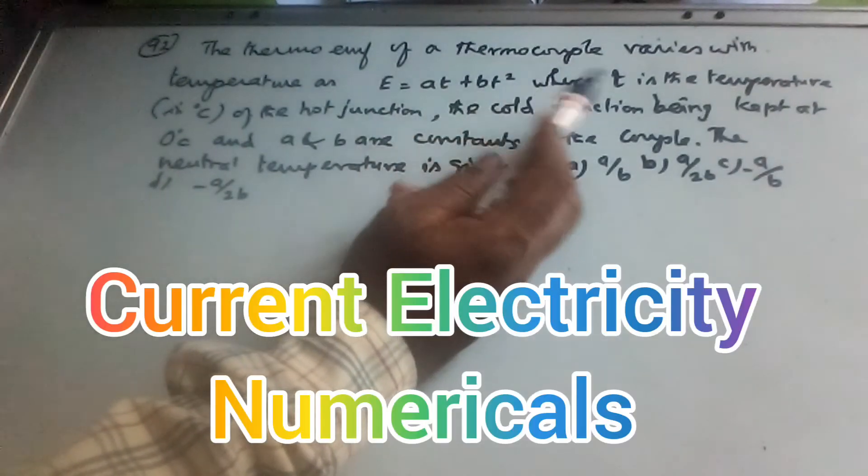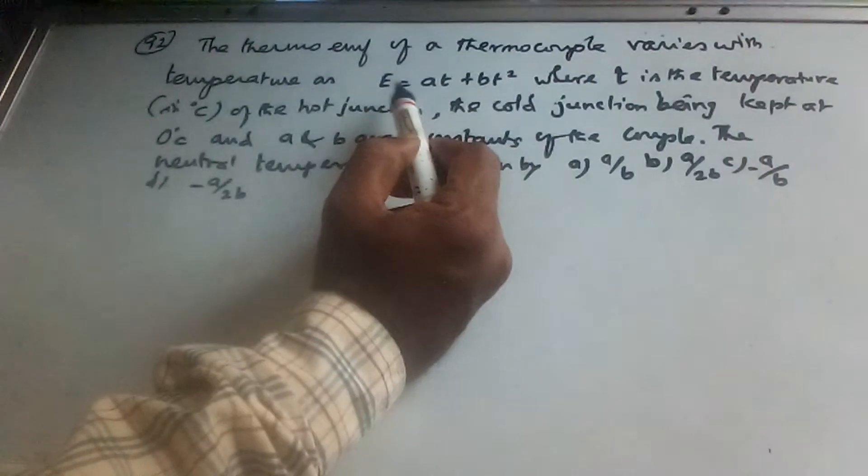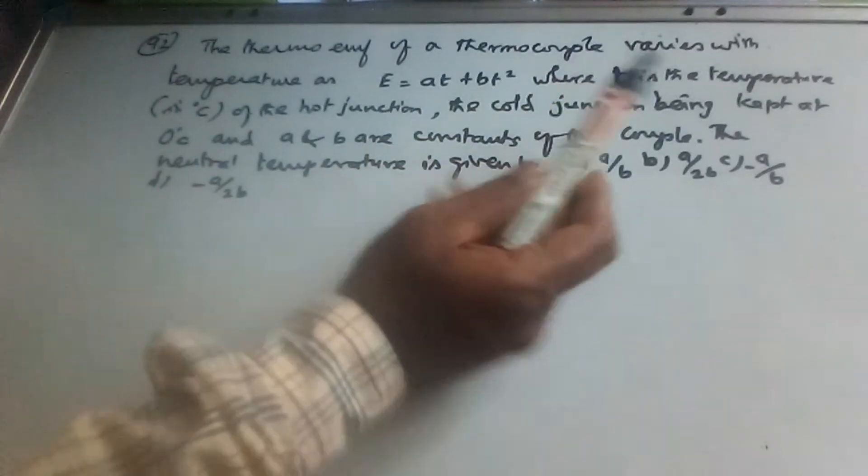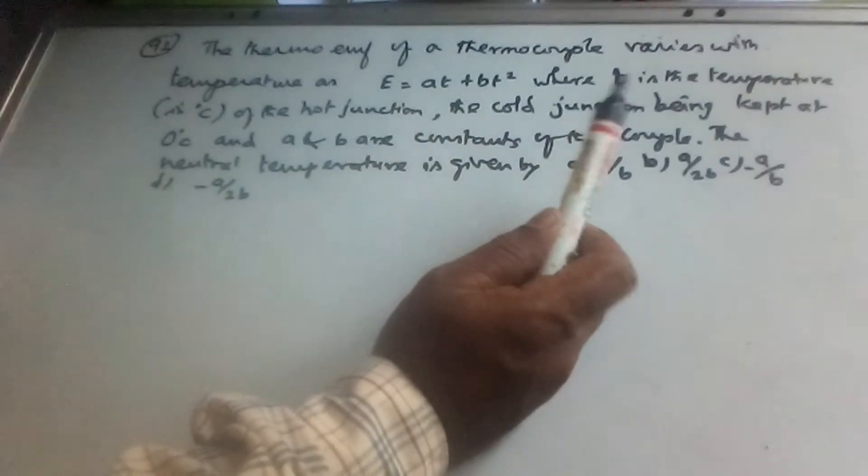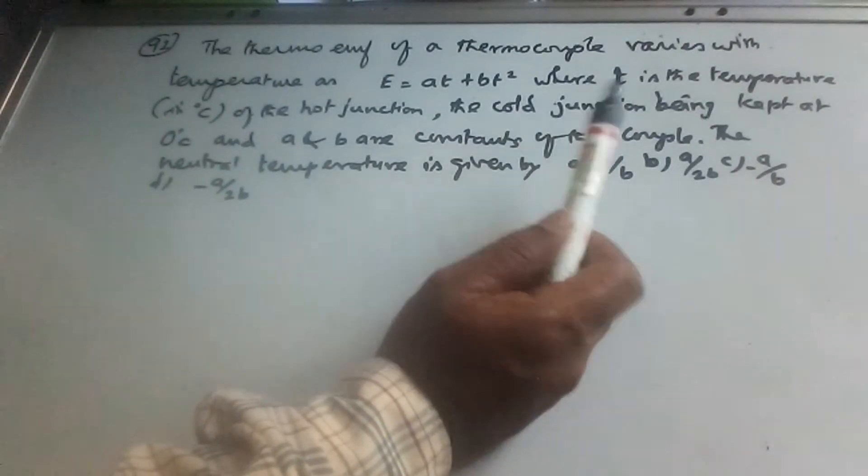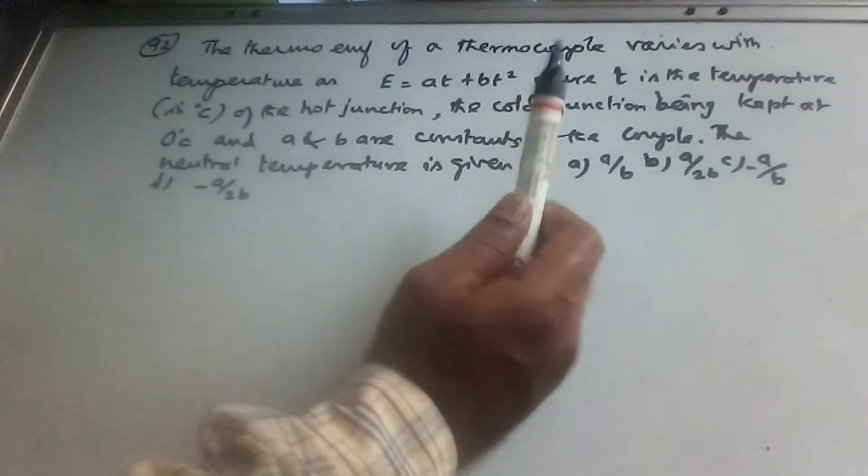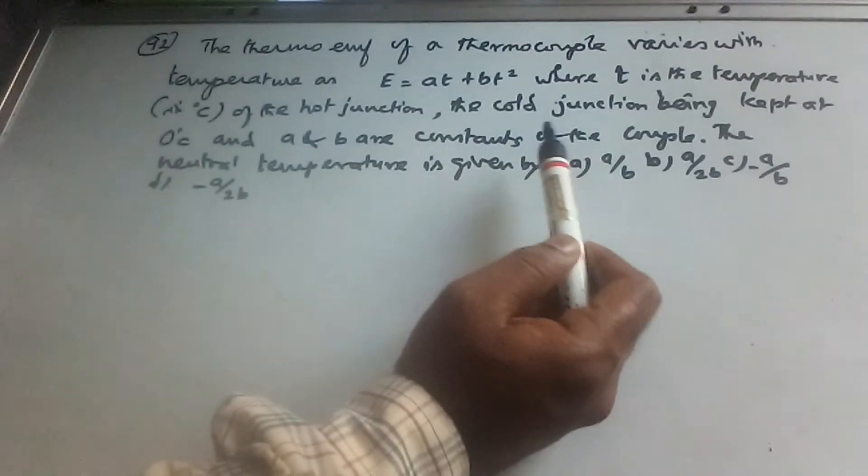The thermo-emf of a thermocouple varies with temperature as E equal to AT plus BT squared, where T is the temperature in degree Celsius of the hot junction. The cold junction is kept at 0 degree Celsius.